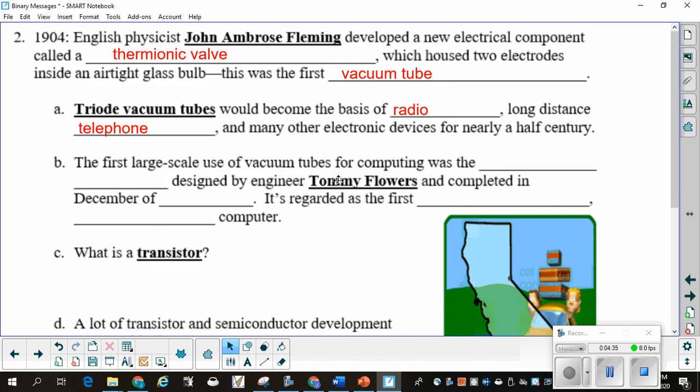The first large-scale use of vacuum tubes for computing was the Colossus Mark I, designed by an engineer named Tommy Flowers, and it was completed in December of 1943. It is regarded as the first programmable electronic computer. There were computers before, but they did a single thing. You couldn't program it to do something else.